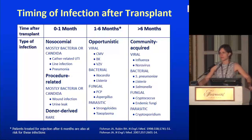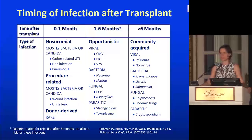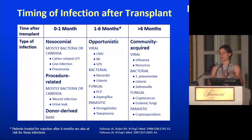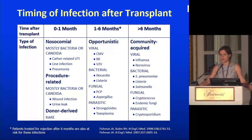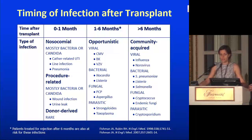This slide is the guidance I give to all transplant ID fellows when they start. When we think about the HIV patient, we use their CD4 count to guide thinking about what infections they'll have. With the transplant recipient, there are two things you use together: when was the transplant, and have they been treated for rejection recently? If the transplant was in the last month, typically they show up with nosocomial things — bacterial or potentially candida-related: UTIs, line infections, pneumonia, wound infections, infected seromas.